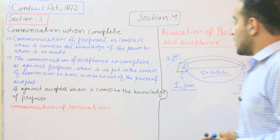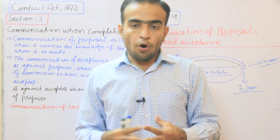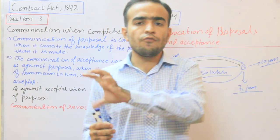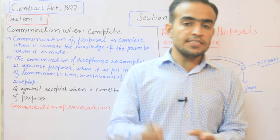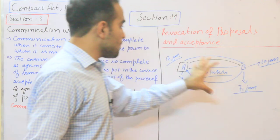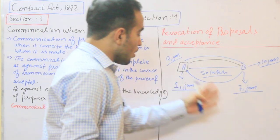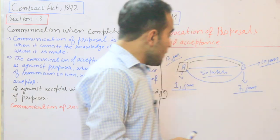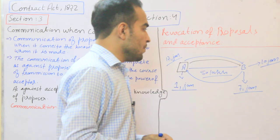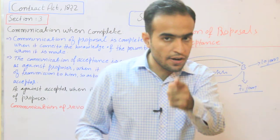Section 4 میں revocation of proposal and acceptance کے بارے میں بتایا گیا ہے — یعنی proposal اور acceptance کو کب revoke کیا جا سکتا ہے۔ یہاں time period بتایا گیا ہے۔ ہمارے example میں A نے 1st January کو letter post کیا، B نے 7 January کو receive کیا، اور B نے 10 January کو acceptance کا letter post کیا۔ اگر A اپنا offer revoke کرنا چاہتا ہے تو اس کے پاس maximum time ہے 10 January سے پہلے تک۔